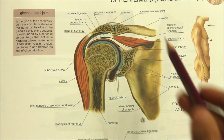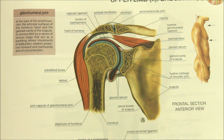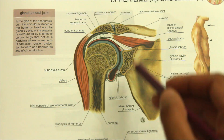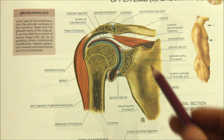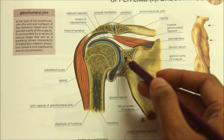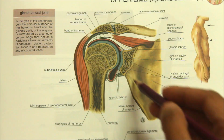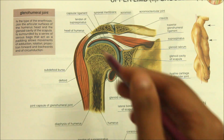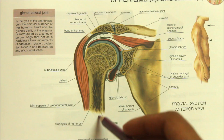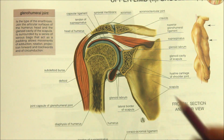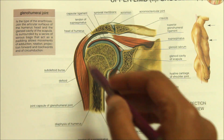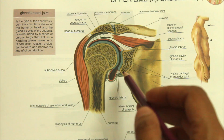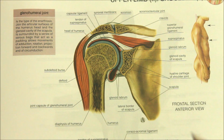Hello guys and welcome back to my channel. In this video we will be learning about the shoulder joint. The shoulder joint is a synovial joint of ball and socket variety. The joint is formed by the articulation of the glenoid cavity of the scapula bone and the head of the humerus bone, therefore it is also called glenohumeral articulation. It is a weak joint but permits great mobility.